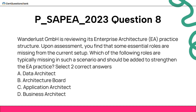Wanderlust GmbH is reviewing its Enterprise Architecture (EA) practice structure. Upon assessment, you find that some essential roles are missing from the current setup. Which of the following roles are typically missing in such a scenario and should be added to strengthen the EA practice? Select two correct answers. A. Data architect. B. Architecture board. C. Application architect. D. Business architect.